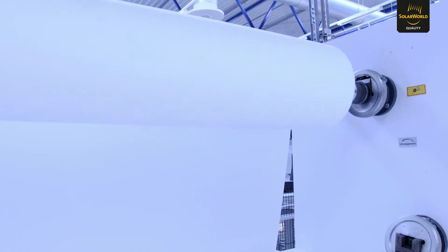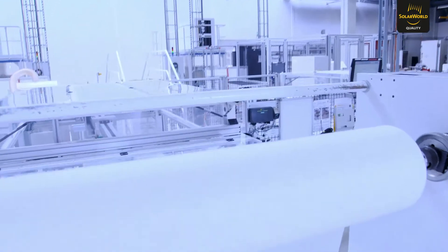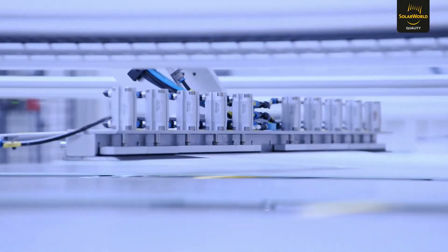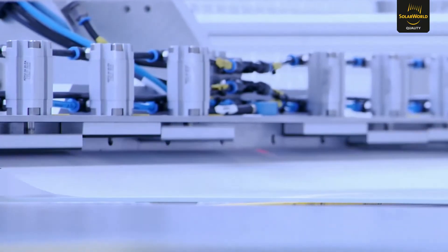After the glass is cleaned, it is covered with an embedding film. This film guarantees the weather-resistant and shock-resistant encapsulation of our solar cells.